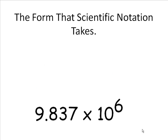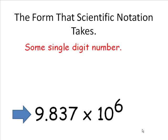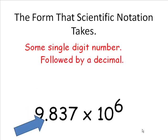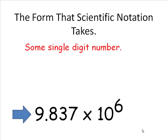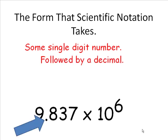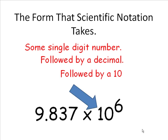The form that Scientific Notation takes is there's some number followed by some decimal. It's a single digit number. So we have a single digit number followed by some decimal, normally then followed by a few more digits. Then there is a power of 10, and then there is some exponent.